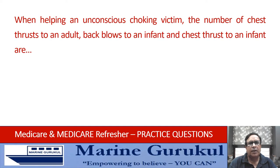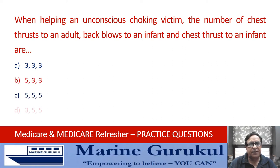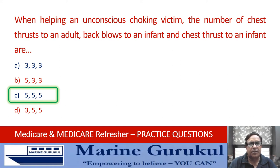When helping an unconscious choking victim, what is the number of chest thrusts to an adult, back blows to an infant, and chest thrusts to an infant? The options are 333, 533, 555, or 355. The answer is C — 555: that means 5 chest thrusts to an adult, 5 back blows to an infant, and 5 chest thrusts to an infant.